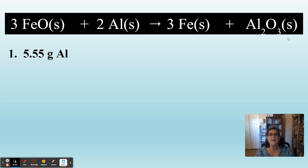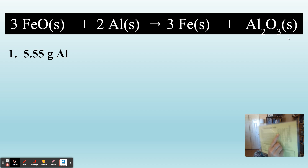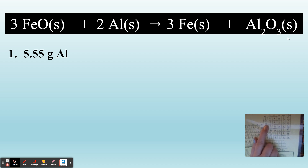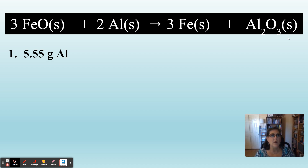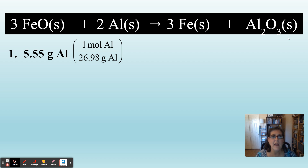Let's work this step by step. Grams to moles — what do we need to go between grams and moles? A molar mass. We need the molar mass of aluminum. So we have 5.55 grams of aluminum. Find aluminum on the periodic table — one mole of aluminum is 26.98 grams of aluminum. We started with grams, so we need grams on the bottom. So it looks like: one mole of aluminum over 26.98 grams of aluminum. Now we have our moles to do the mole ratio.